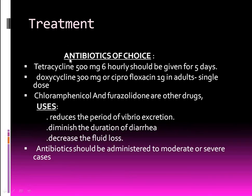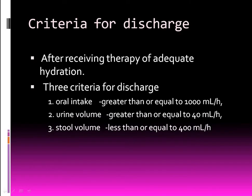Antibiotic therapy: tetracycline 500 mg every six hours for five days; doxycycline 300 mg or ciprofloxacin 1 g as a single dose in adults; chloramphenicol and furazolidone are other options. Antibiotics reduce the period of Vibrio cholerae excretion, shorten diarrhea duration, and decrease fluid loss. Discharge criteria: oral intake ≥100 ml/hour, urine output ≥40 ml/hour, and stool volume ≤400 ml/hour.